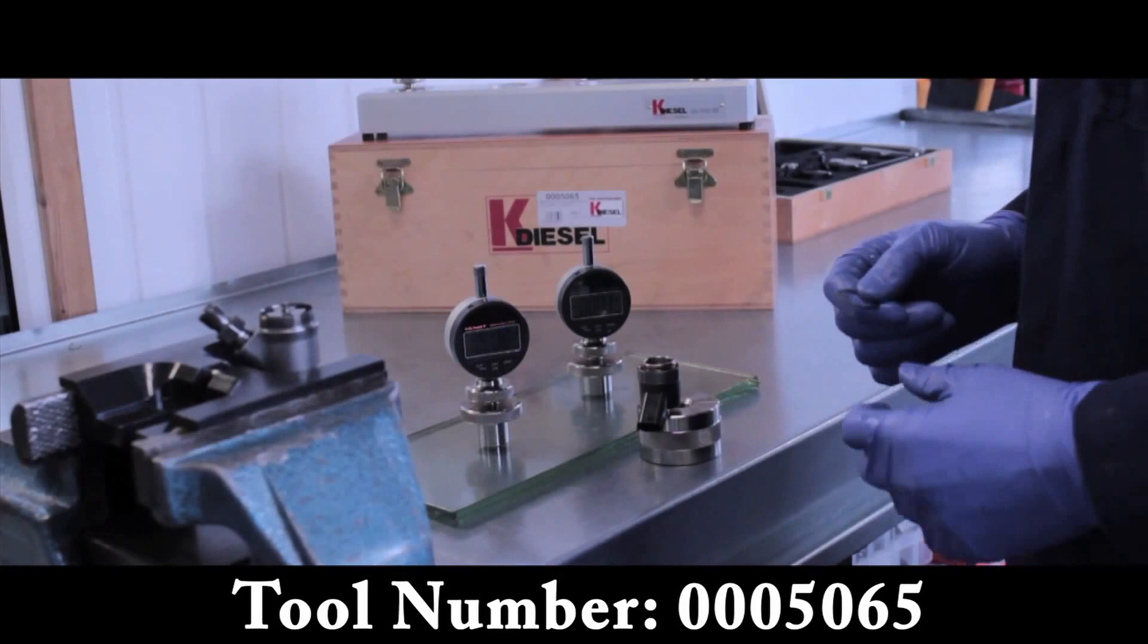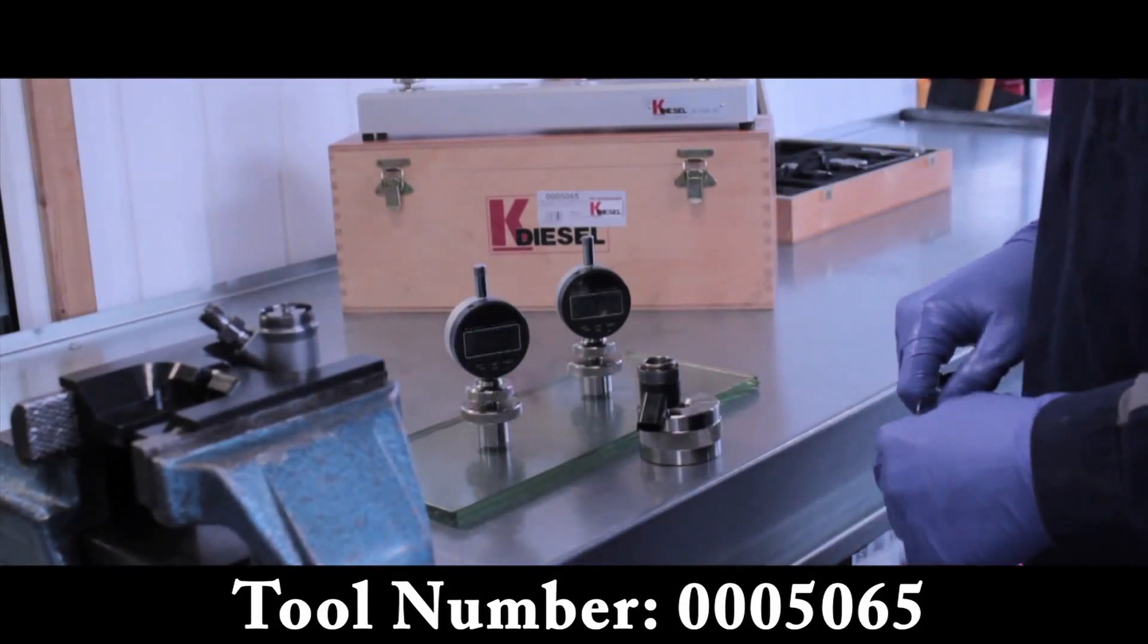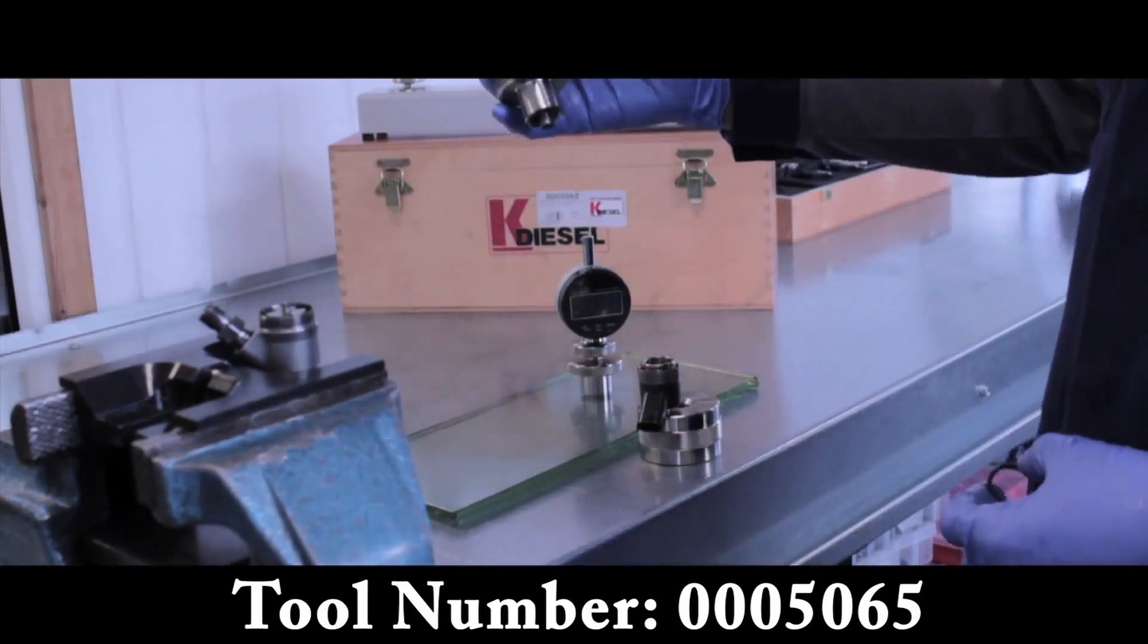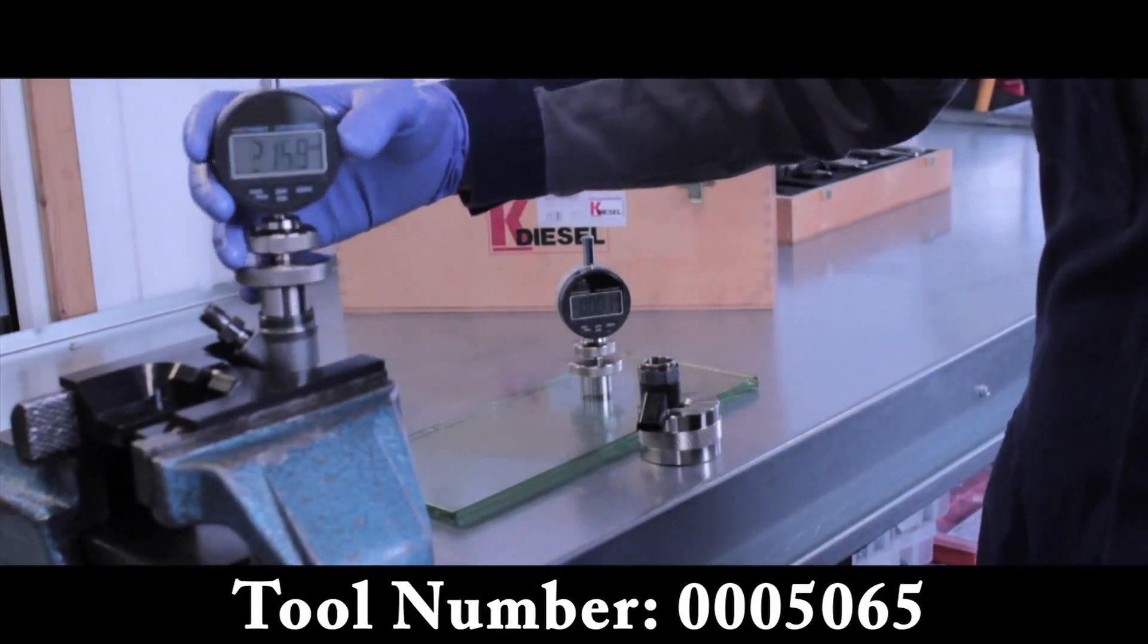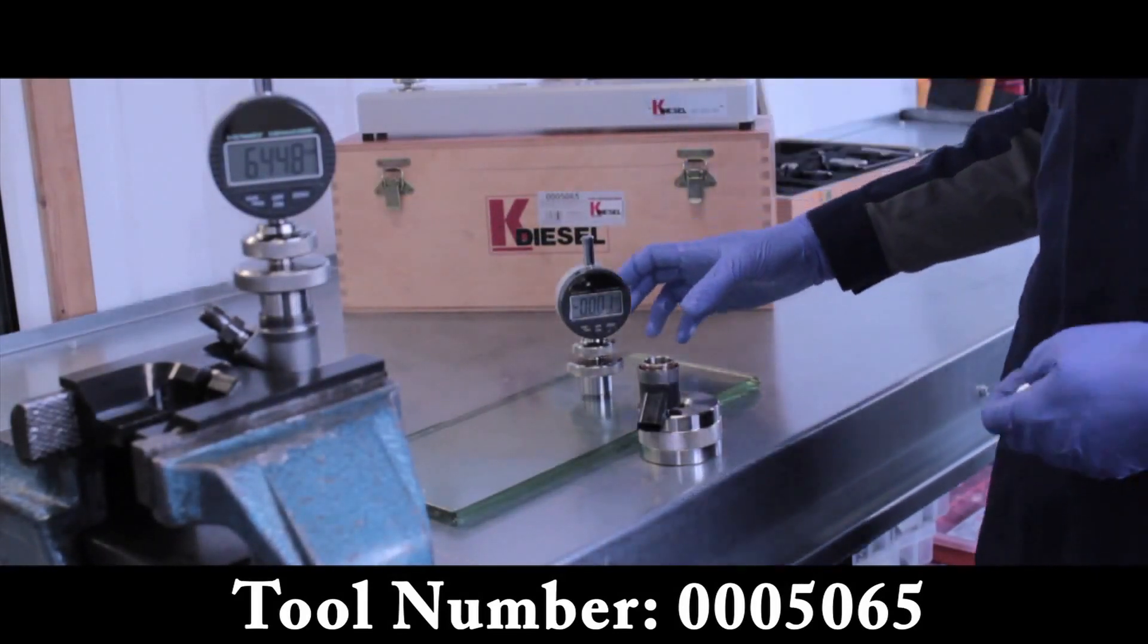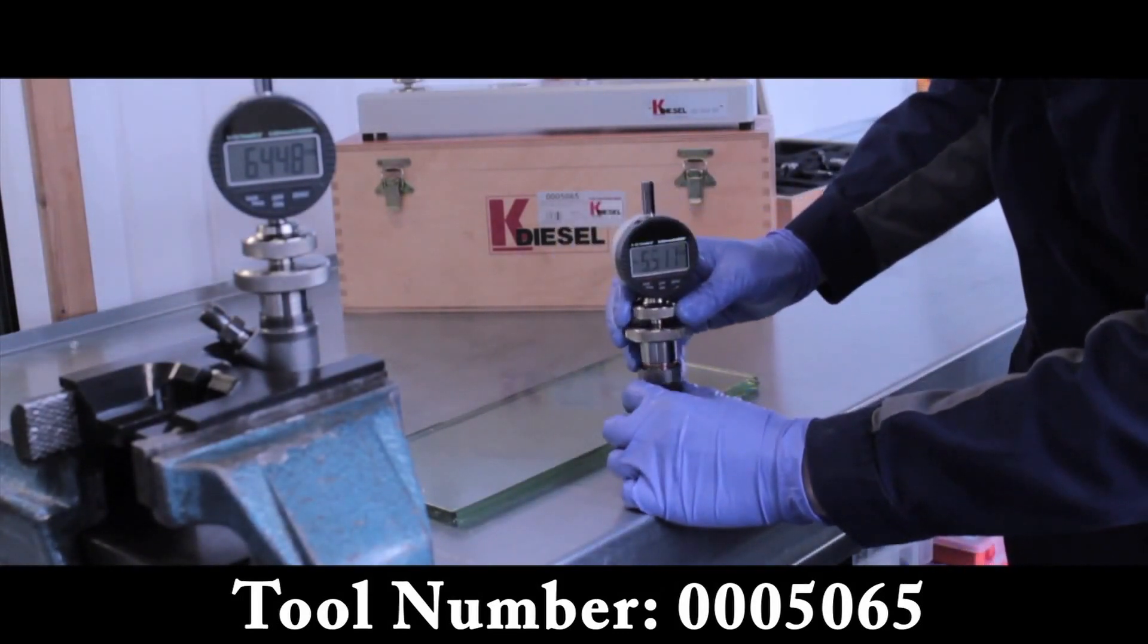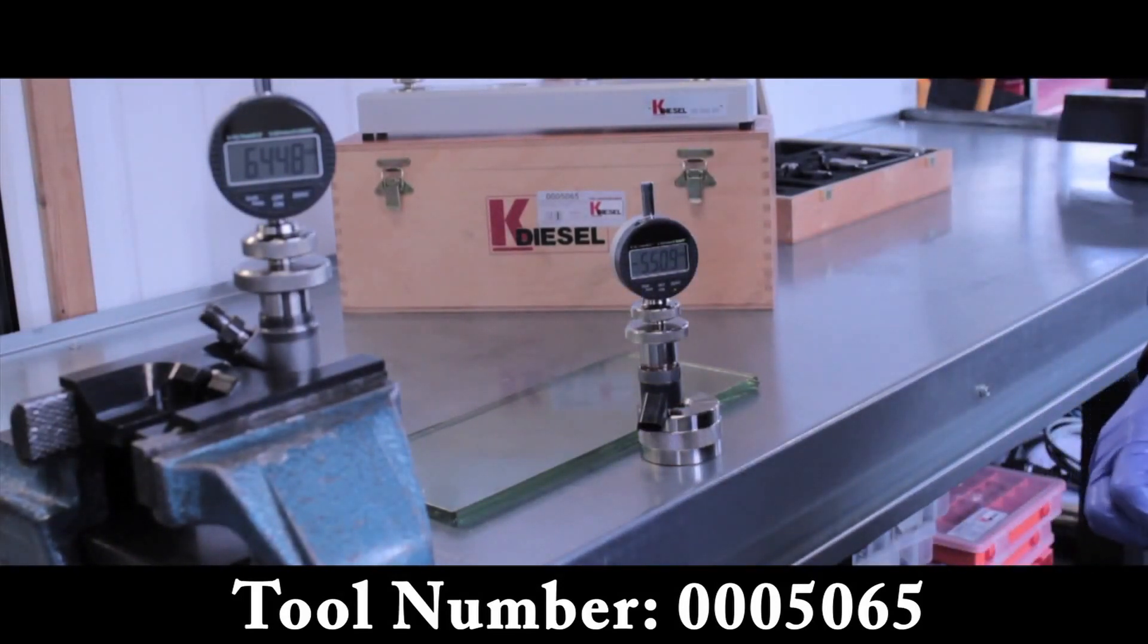Gauges two and three are used to decide what size magnetic shims should be fitted to the injector. So gauge two we take—we've already pre-zeroed it, but we're just going to check the depth between the body. Again, we're going to take gauge three, and we're now going to check the depth of the actuator. We take these two figures and make a small calculation and determine the thickness of the shim.